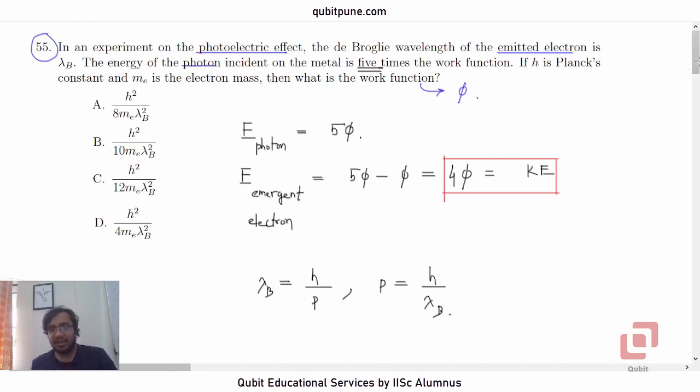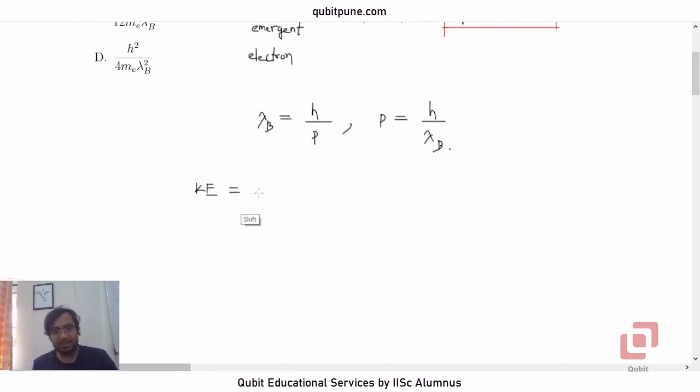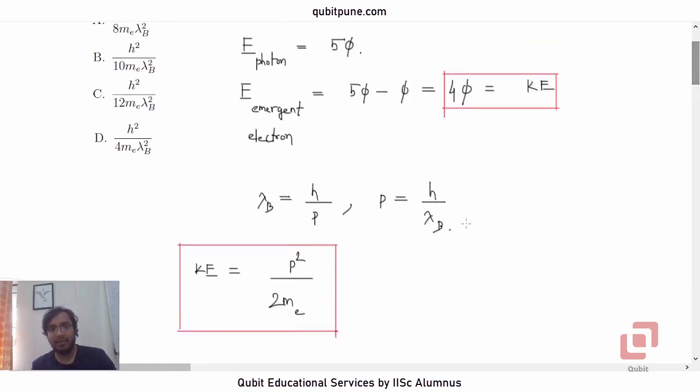Now what is the kinetic energy? Kinetic energy is actually p squared by 2m and let me use me because it is electron. So, this is a formula which you know from mechanics. Otherwise, you can derive it very easily. You have to square mv. So, that will be m squared v squared and if you divide it by 2me, you will get half me v squared. That is the formula for kinetic energy. Now why did we do this? We did it because we wanted to include or bring in the lambda b part.